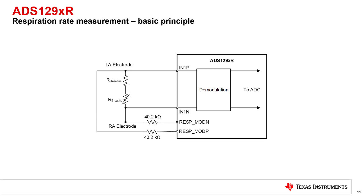In this diagram, we are modeling the patient by a combination of a constant impedance, R baseline, and a changing impedance, R breathe. R baseline is a constant value ranging between a few hundred ohms to a few thousand ohms. R breathe corresponds to the change in the body's impedance as the thoracic cavity expands and contracts.